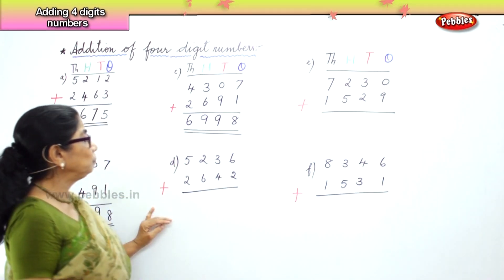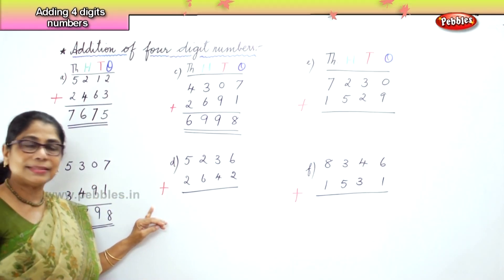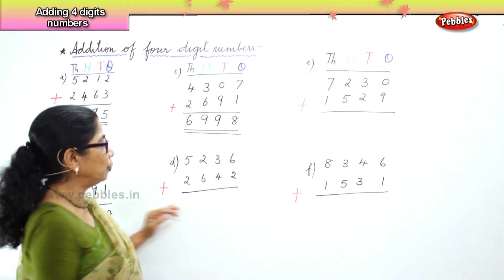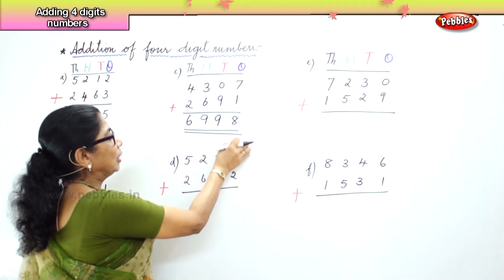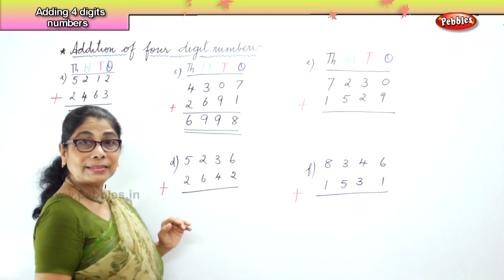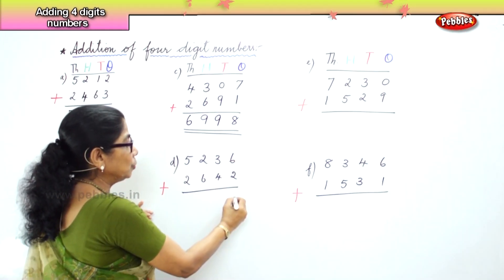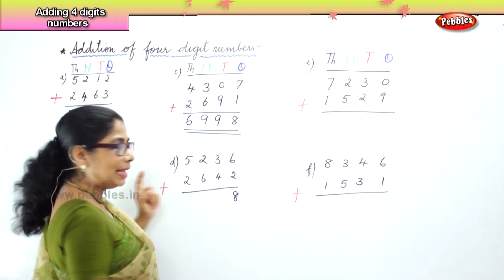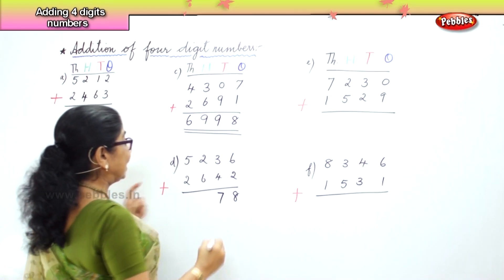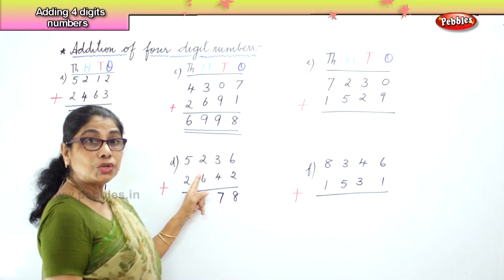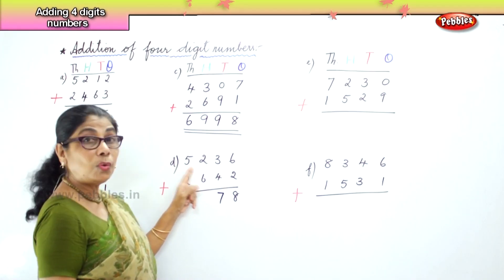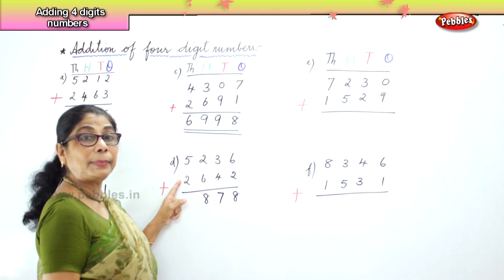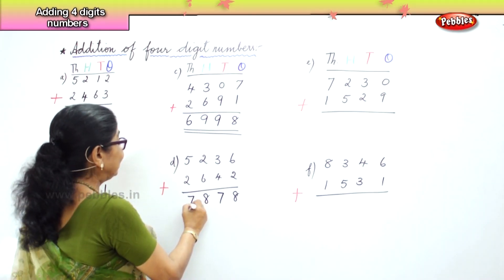Let's look at the next sum: five thousand two hundred and thirty-six plus two thousand six hundred and forty-two. In the ones place, you have six ones and two ones — six plus two is eight ones. In the tens place, four plus three is seven tens. In the hundreds place, six plus two is eight hundreds. And in the thousands place, you have five plus two — seven thousand.